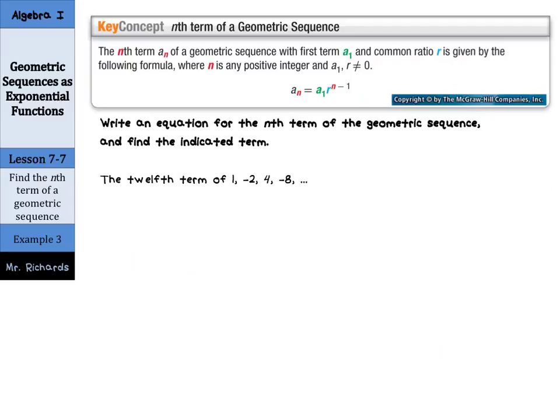What if we don't want to find just the next three terms, but the hundredth term of a sequence? We can use this formula. The nth term, a_n, of a geometric sequence with first term a_1 and common ratio r is given by the formula where n is any positive integer and a_1 and r are not equal to zero. So the nth term, a_n, equals the first term times the common ratio to the n minus 1 power, where n is the term you're looking for.